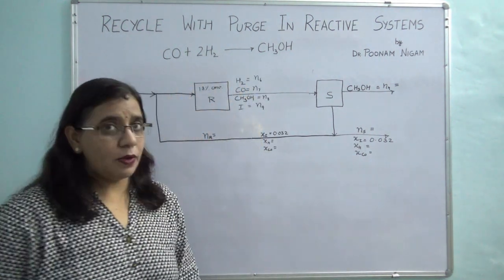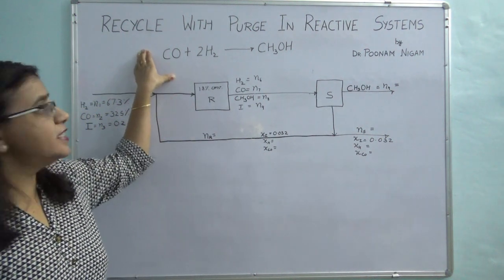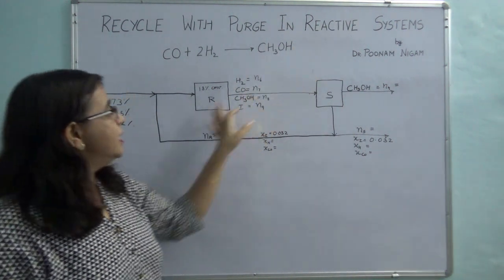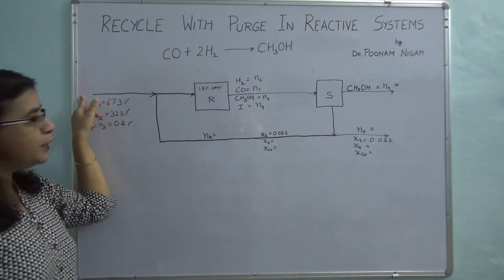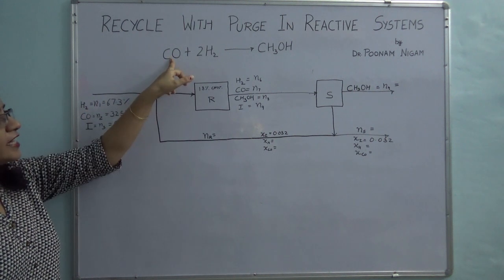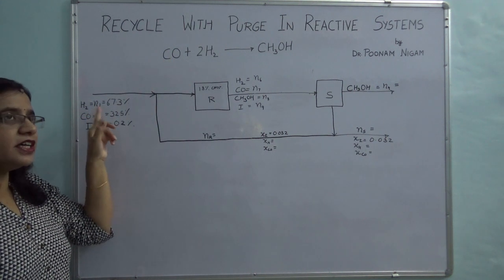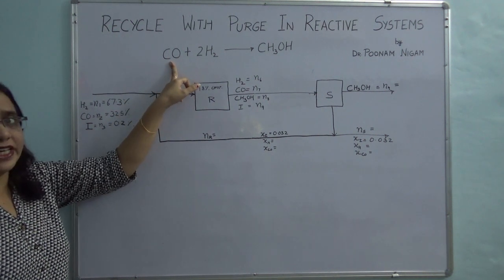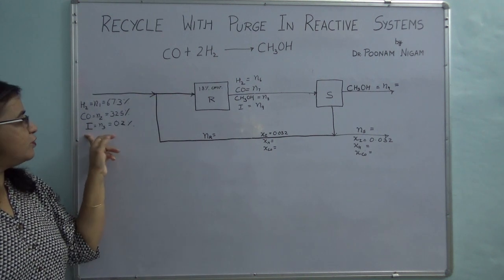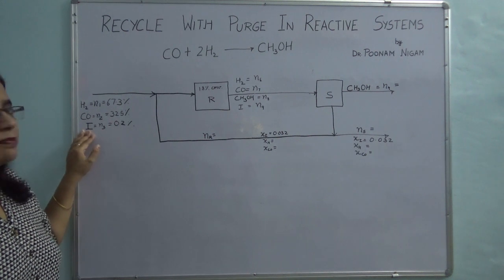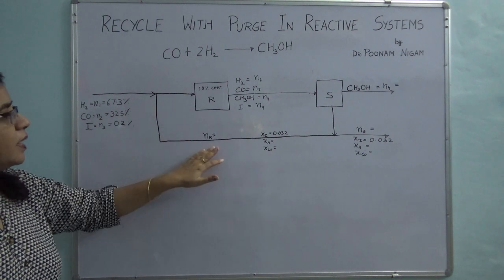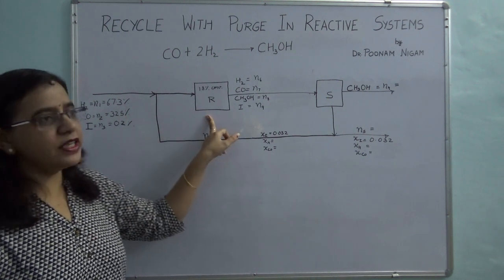This problem is taken from Hemelblau. A reaction of CO with hydrogen is taking place in order to produce methanol in a reactor. The fresh feed composition is given. The reactants are hydrogen and carbon monoxide, but along with it some amount of methane is also going in, which is marked as inert (I) since it is not taking part in the reaction. Its concentration is 0.2%. This fresh feed combines with the recycled stream and goes to the reactor.